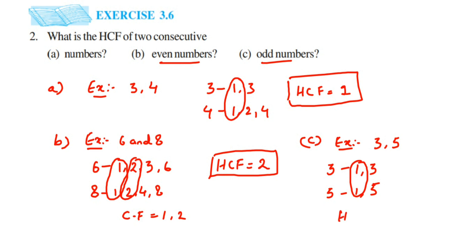The common factor is 1, so the Highest Common Factor will also be 1. Not only for 3 and 5 — if you take 9 and 11 or any two consecutive odd numbers, it is always 1. This is a very simple question but it can come in fill-in-the-blanks or true-or-false questions. I hope this is clear. If you have any other question or doubt, you can drop a comment. Thank you so much for watching!